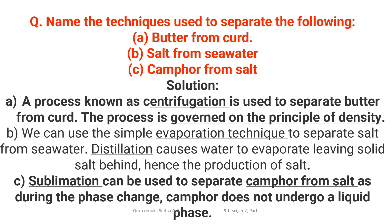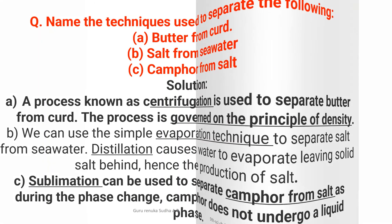In summary: butter from curd uses centrifugation, salt from seawater uses evaporation, and camphor from salt uses sublimation. Using these techniques, we can separate each of these substances from one another.